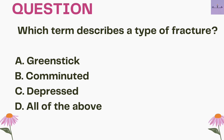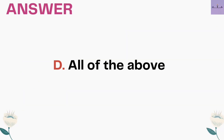Next question: which term describes a type of fracture? A. Green stick, B. Comminuted, C. Depressed, D. All of the above. The answer is option D, all of the above. Green stick, comminuted, and depressed are all different types of fractures.